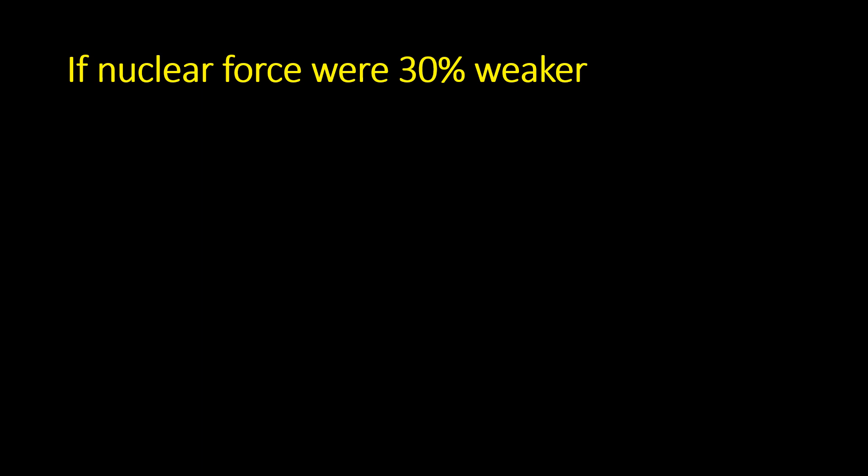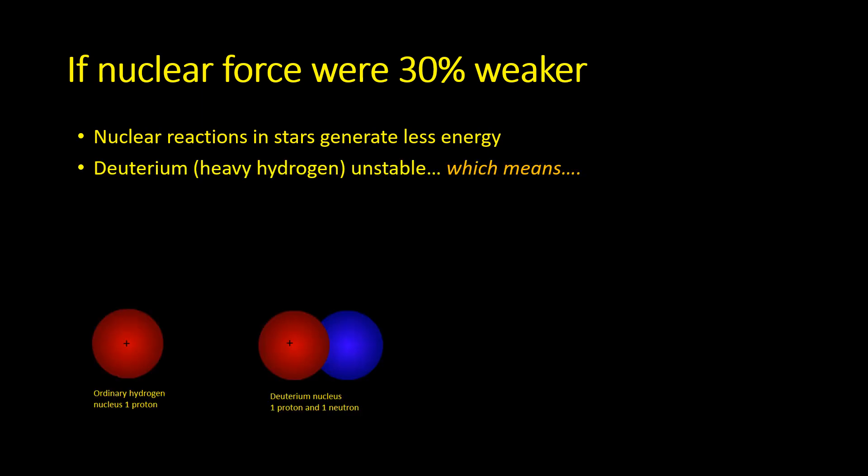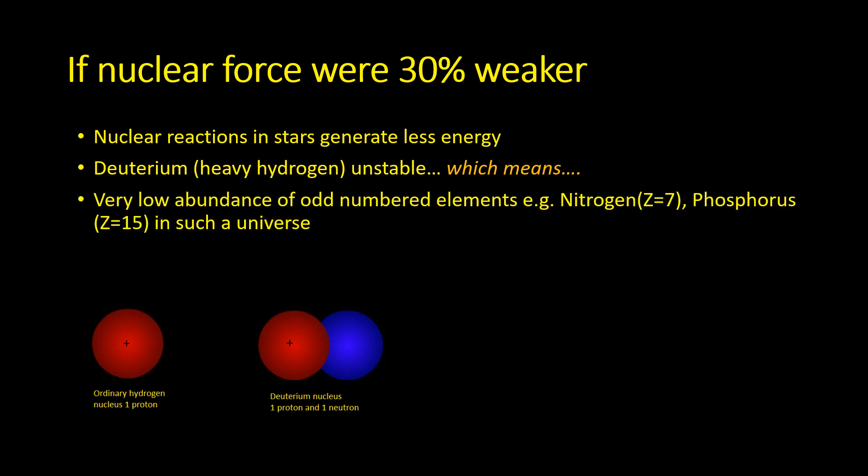However, the nuclear force doesn't even have to be the full three times weaker to prevent the development of life. Barrow and Tipler point out if it was only 30% weaker, this would have two significant effects. Firstly, the nuclear reactions which occur in stars would generate significantly less energy. But even more importantly, deuterium, heavy hydrogen, would be unstable. Now deuterium is an important component in the nuclear reactions which create the odd number elements such as nitrogen, phosphorus and sodium. So without deuterium, the abundances of these odd number elements will be very low, and these elements are essential for the chemistry of life.